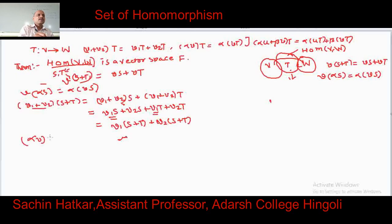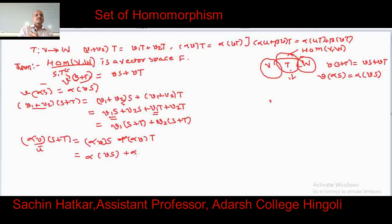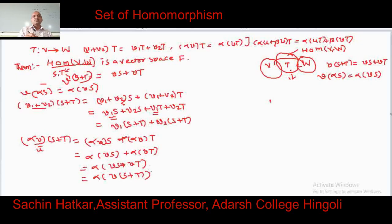Now for the second condition: (S + T)(αV) equals S(αV) + T(αV). Since S is a homomorphism it satisfies the second condition, giving α·S(V) + α·T(V). Taking α common we get α·(S(V) + T(V)). Hence this equals α·(S + T)(V). Both conditions of homomorphism are satisfied and therefore S + T is again a homomorphism.